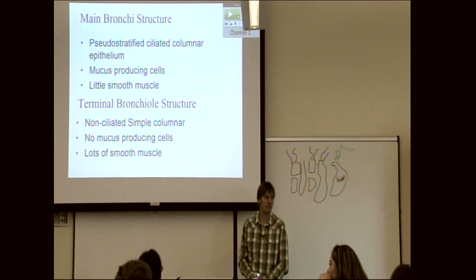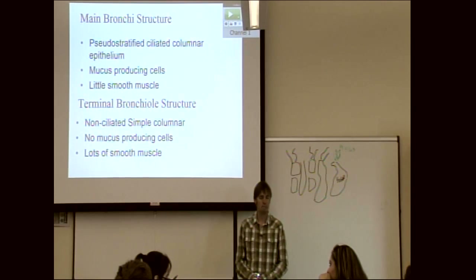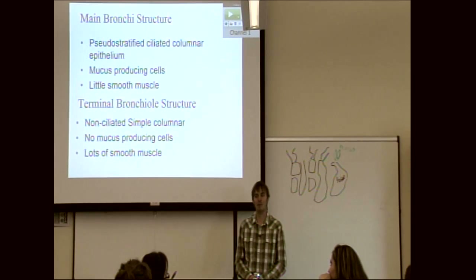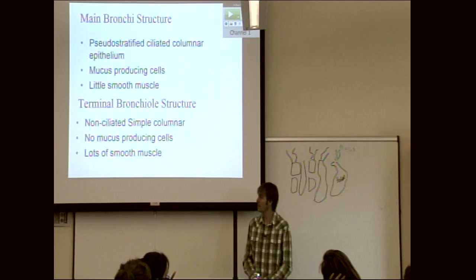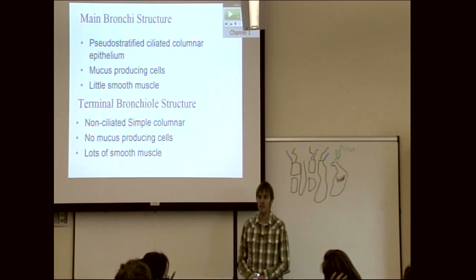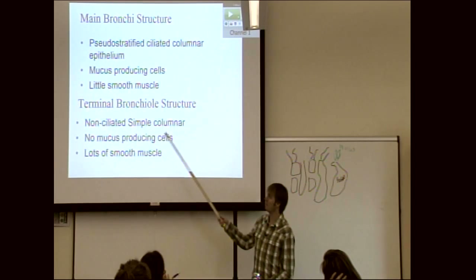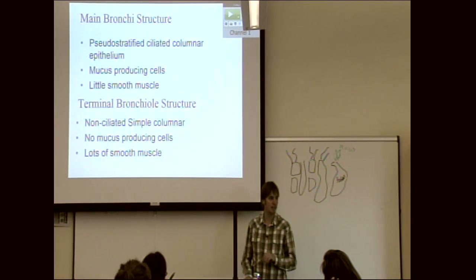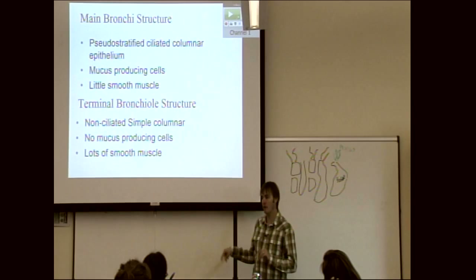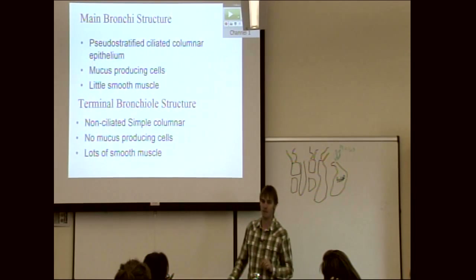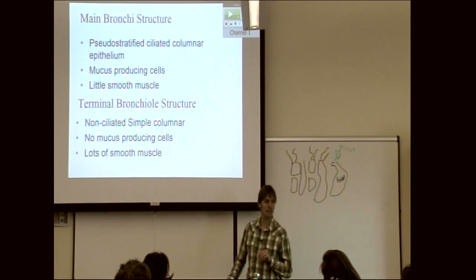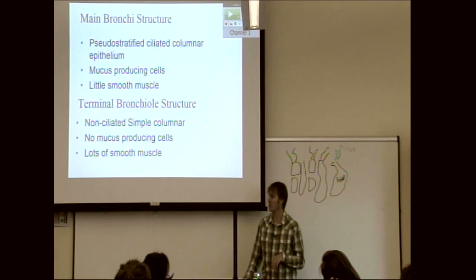Why do terminal bronchioles have lots of smooth muscle? You're changing how much air gets to the alveoli for gas exchange. In asthma, for example, these are the passageways that get so narrowed you can't breathe. During exercise, that smooth muscle relaxes and lets more air down to the alveoli.